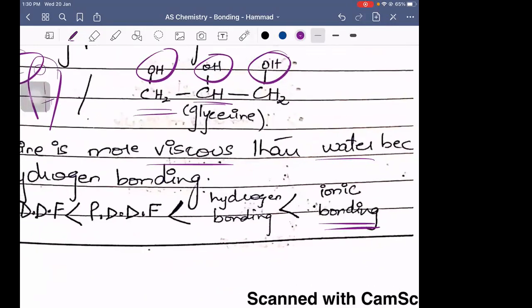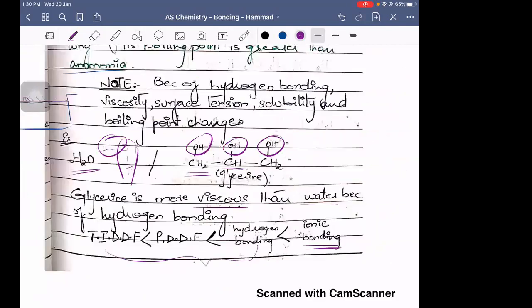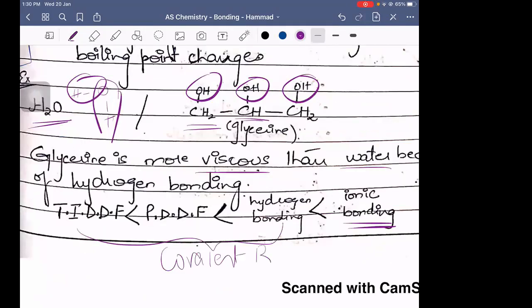These three are different types of covalent bonds. In covalent bonds, we have three categories. One is hydrogen bond, which can become three specific elements with hydrogen bonds. If there is a hydrogen bond, then there is definitely a permanent dipole-dipole force and a temporary induced dipole-dipole force, which is the reason why it is stronger than both of them.